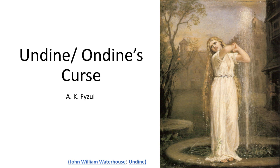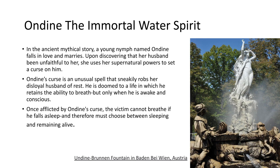Today we'll be talking about Undine's curse. Undine is a mortal water spirit — a nymph — and according to folklore, she falls in love and marries a man. She turns into a human, but unfortunately she discovers that her husband had been unfaithful to her.